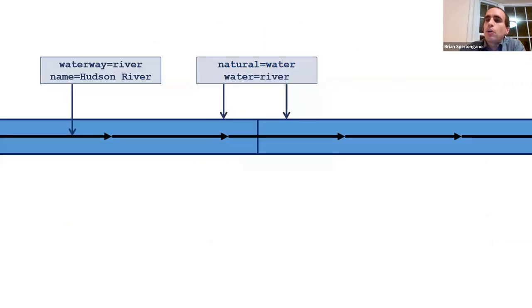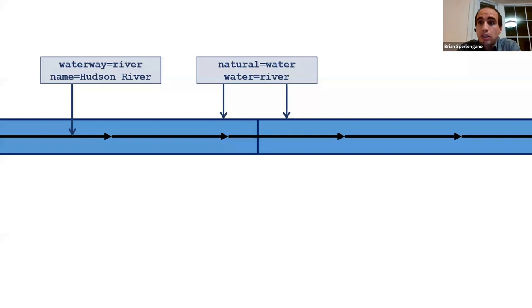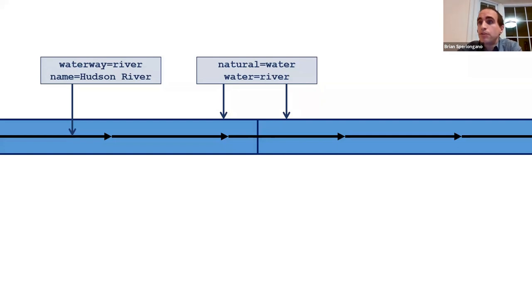At this point in OpenStreetMap history, rivers are tagged with two objects: a waterway=river runs down the middle of the river, and a completely separate object is used to tag the water-covered area. The name tag is applied only to the waterway object.